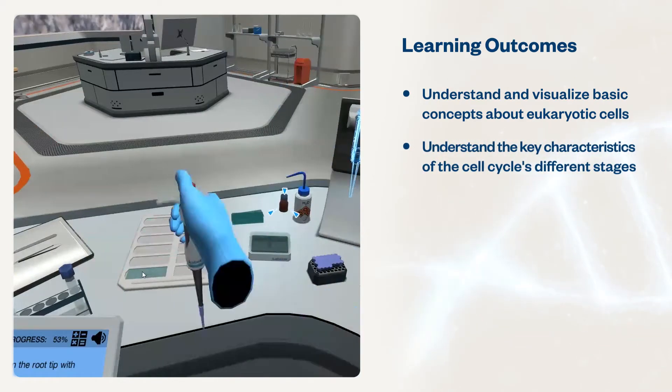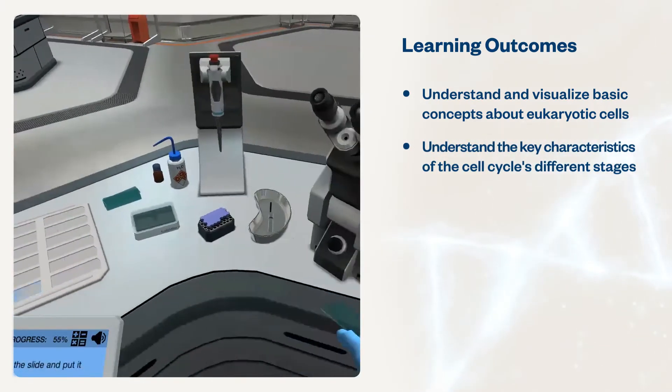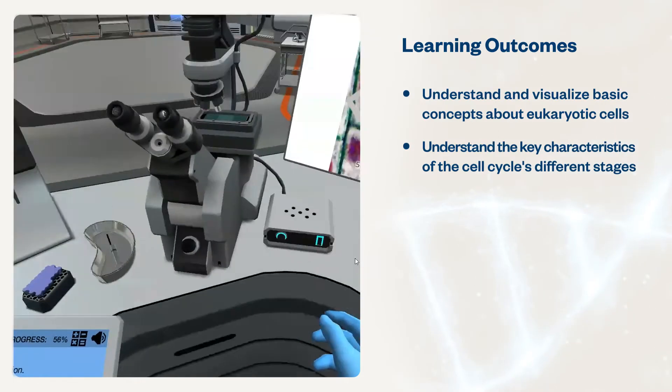Understand the key characteristics of the cell cycle's different stages: interphase, G1, S, and G2, and mitosis.